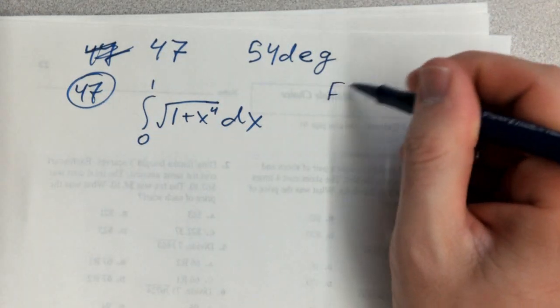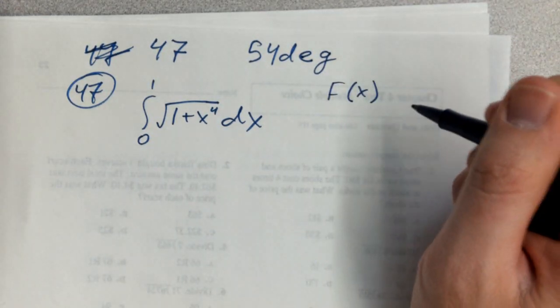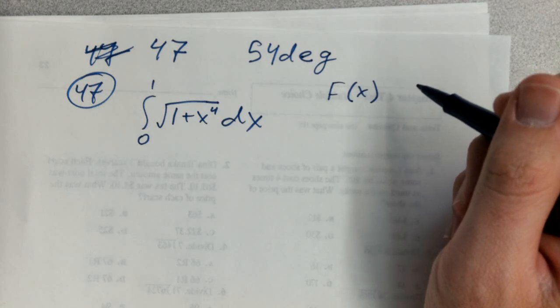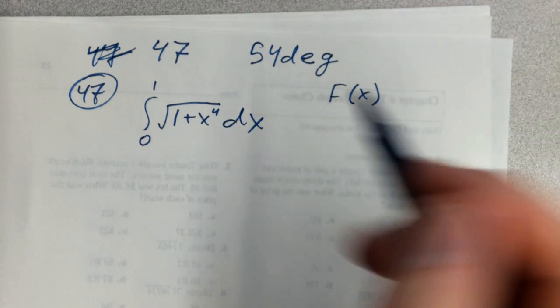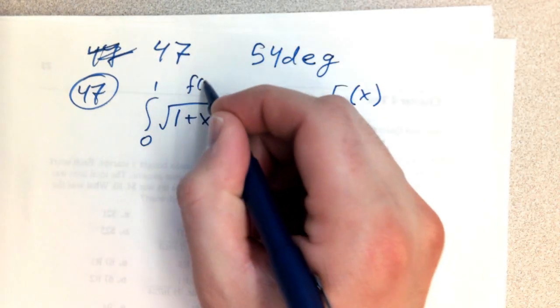So anyway, they tell us that capital F of X is equal to the anti-derivative of f, and that this is f of X right here.